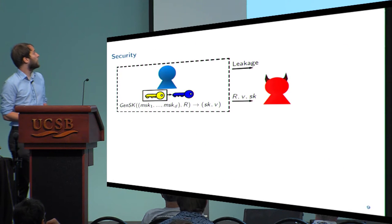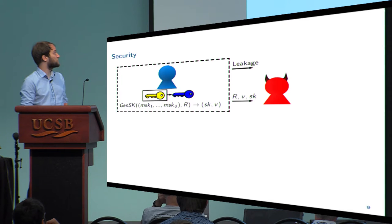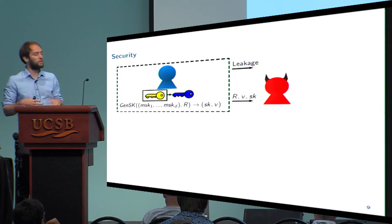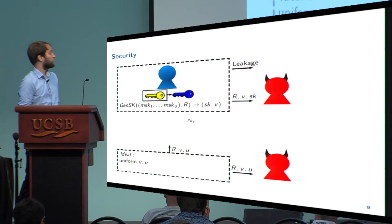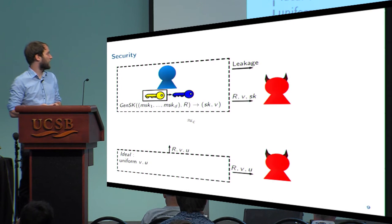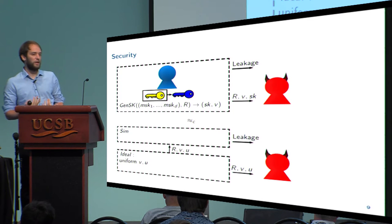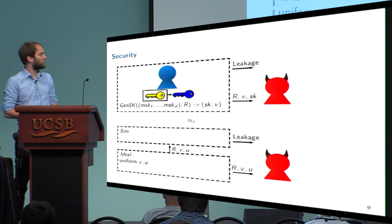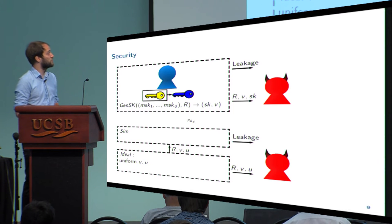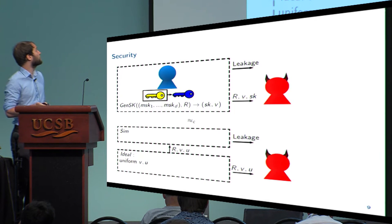For security, we consider a real world where an adversary receives some leakage from the party, but also receives the randomness, correction information, and the session key. We say it's secure if the adversary cannot distinguish this real-world setting from an ideal setting where the session key is uniformly random and the leakage comes from a simulator using only the randomness, uniformly random correction information, and a random secret key. If an adversary cannot distinguish these two settings, then he cannot profit from the leakage and cannot distinguish the session keys from uniformly random keys.